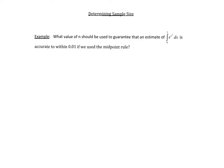Let's discuss how we can determine the sample size required in order to be within a certain error bound of our approximate integration. In this example, we want to figure out what n should be used to guarantee that when we estimate this particular definite integral, we will be accurate to within 0.01 using the midpoint rule.